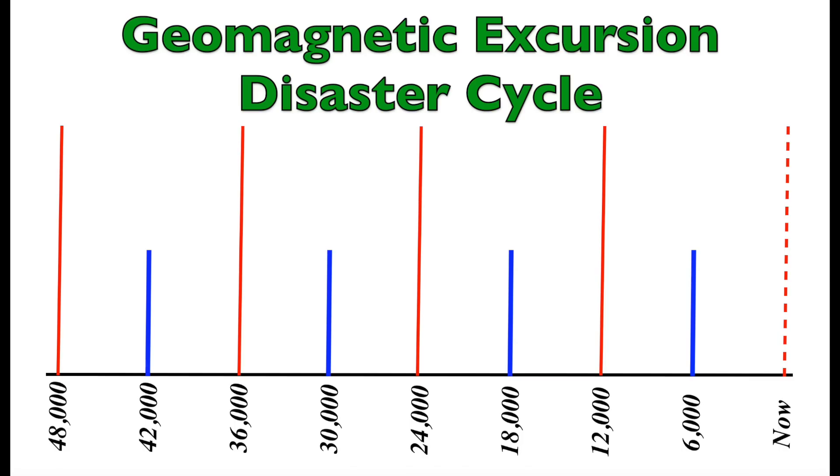Scientific evidence has shown us that it is a 12,000 year major geomagnetic excursion disaster cycle with a mini disaster cycle on the 6,000 year half cycle mark. The red lines here show those major events, while the blue lines show the minor ones.